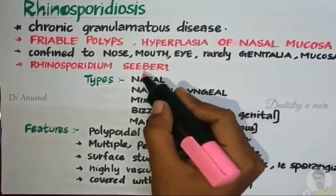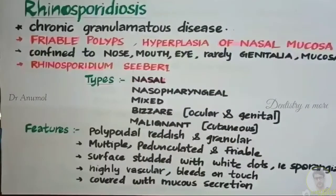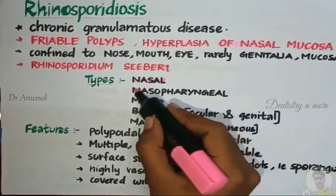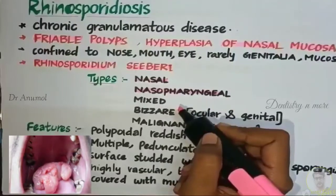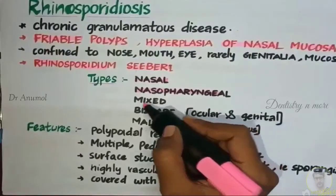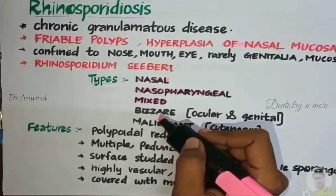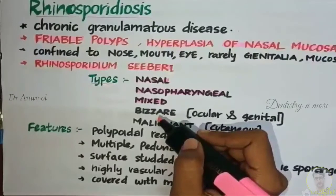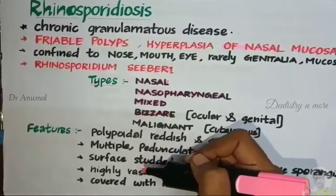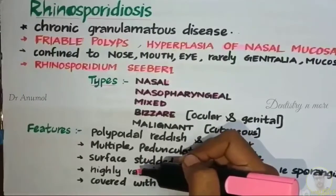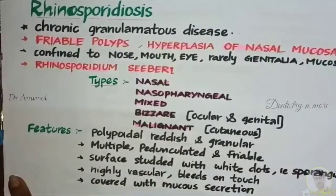In nasal type, the nasal mucosa will be infected. In nasopharyngeal type, both the nasal mucosa and pharyngeal mucosa will be infected. In mixed type, we can see the features of both nasal and nasopharyngeal Rhinosporidiasis. In bizarre type, ocular and genital lesions are also seen, and in malignant type, cutaneous lesions are seen.